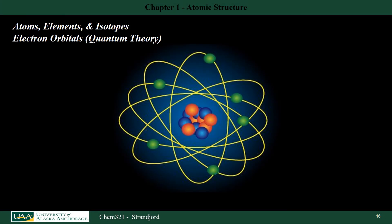This video will cover slides 16 through 26 in the chapter 1 lecture notes. The topics will include a discussion on the carbon atom and its isotopes, followed by a discussion on the Bohr model of the carbon atom, followed by an introduction to the quantum mechanical model of the carbon atom. Most of this will be a review from general chemistry with a focus on the carbon atom.